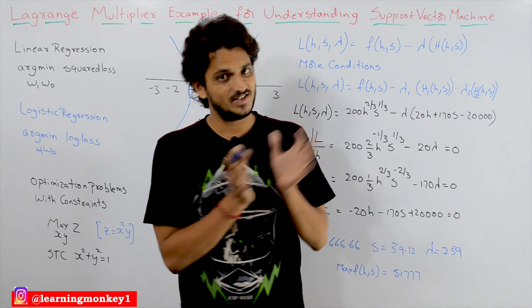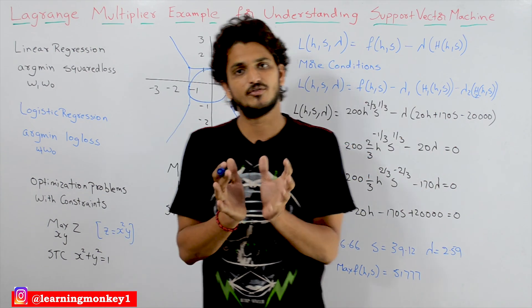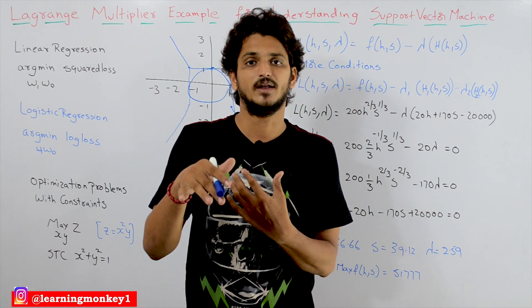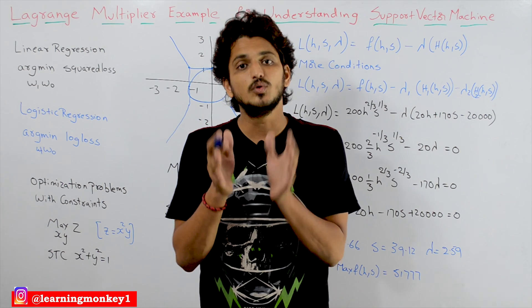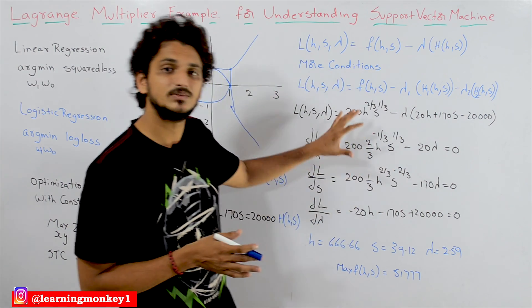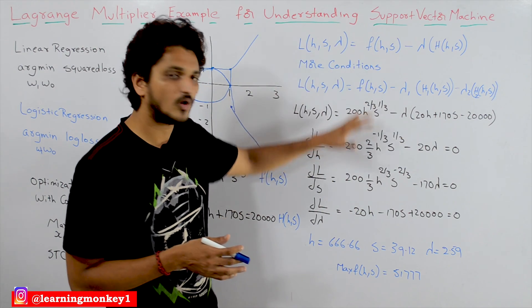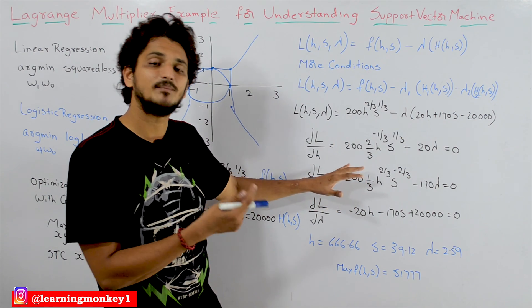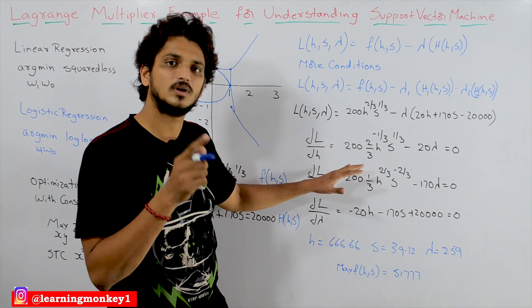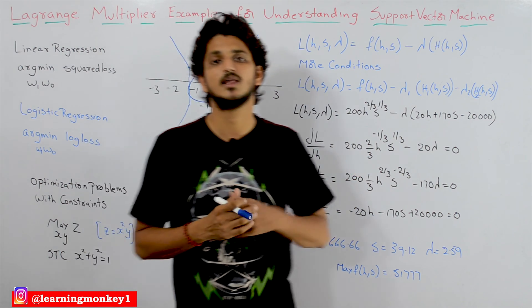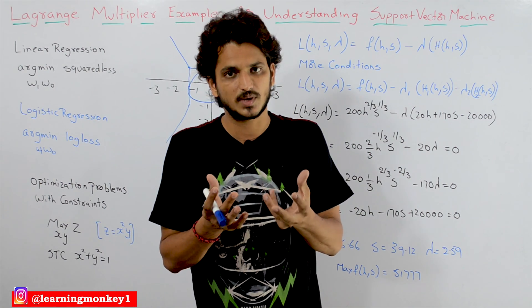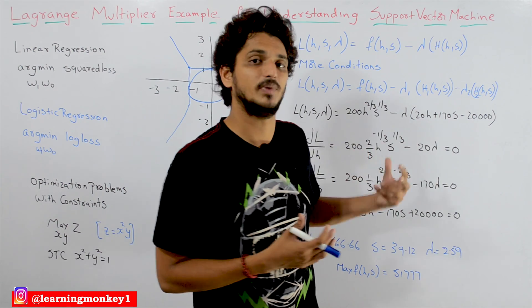Understanding this example is enough for understanding support vector machines and for placement questions. If you want to do research in machine learning, then you need the mathematics behind this — why we are following these steps, what is the mathematical logic. These steps are must for a researcher, because understanding research papers depends on the mathematics behind this.